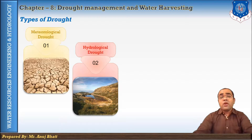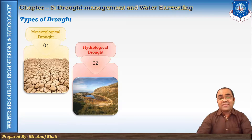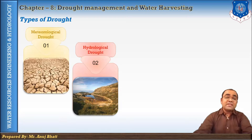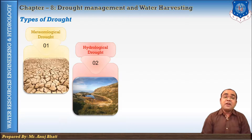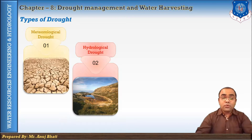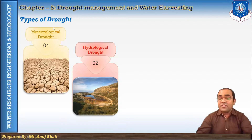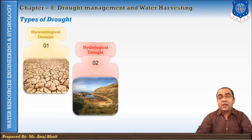The second type is hydrological drought. Hydrological drought is brought about when the available water reserves in sources such as aquifers, lakes, reservoirs, and rivers fall below the statistical average value. It is associated with the effect of a period of precipitation shortfall on surface and subsurface water supply. Hydrological drought has four components: magnitude, duration, severity, and frequency of occurrence of precipitation.